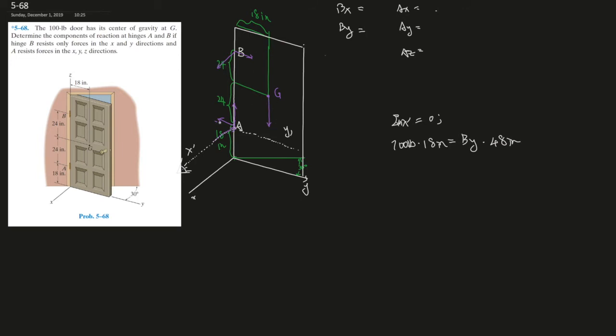So we know for a fact that this force has to counteract this one because there's no other force that can generate a moment on the x prime axis.